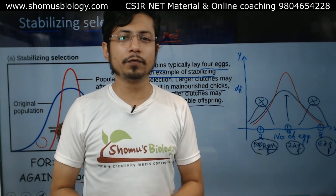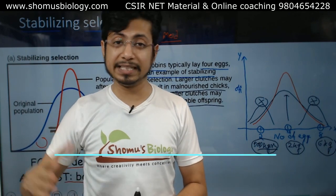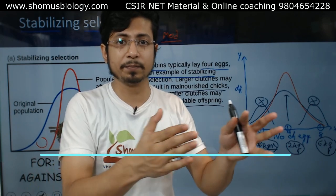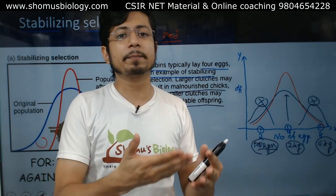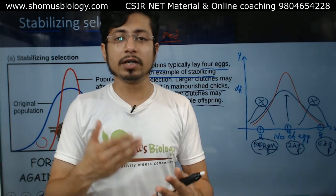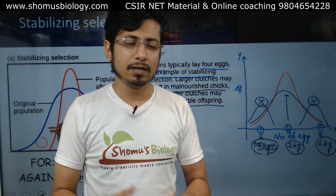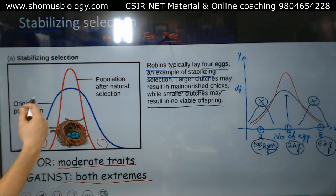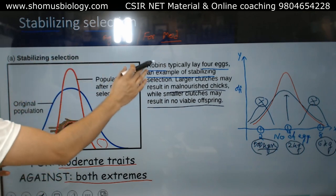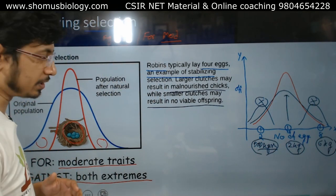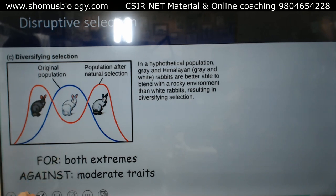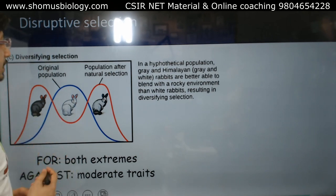Hello friends, welcome back to another video from Shomu's Biology. In this series of natural selection lectures, this time we are going to talk about disruptive selection — you can call it disruptive selection or disruptive natural selection. We have already talked about stabilizing selection as well as directional selection. If you want to watch those, you can watch those lectures separately.